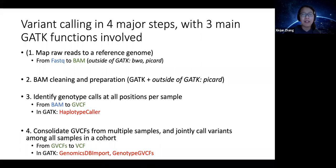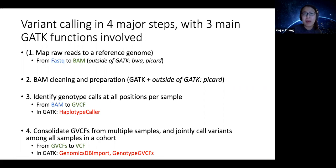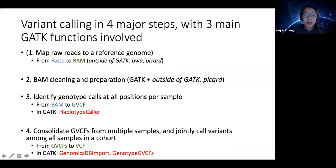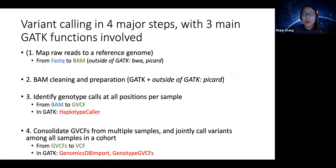In GATK specifically, there are four major steps. Step one — completely outside GATK — is mapping reads to a reference genome to generate the BAM file. Step two begins to involve GATK: cleaning and preparing the BAM file so it's ready for variant calling. Step three, the first fully GATK-specific part, is identifying genotypes at all positions for each sample — this is where we generate GVCFs from BAM files using GATK's HaplotypeCaller tool.